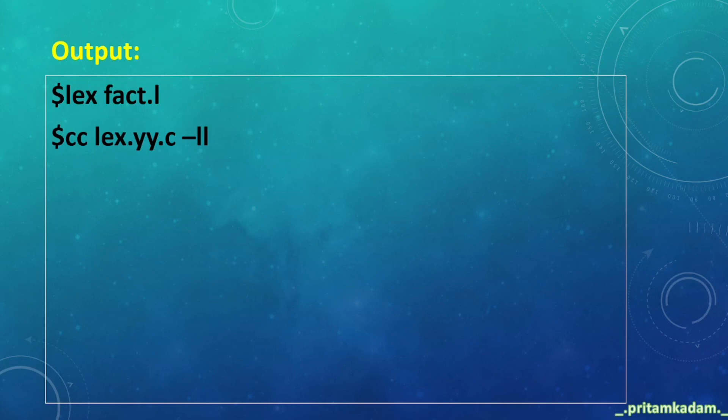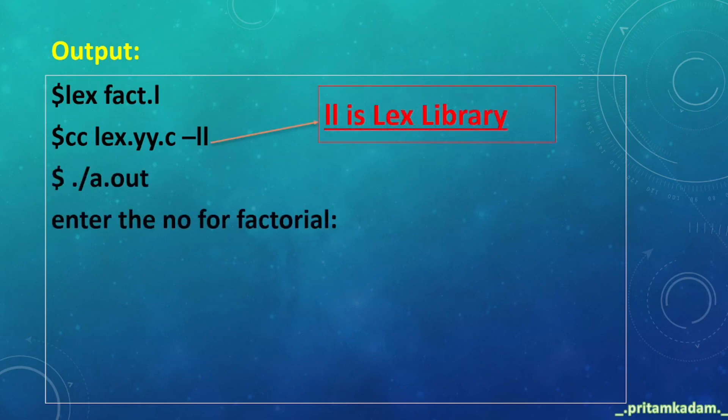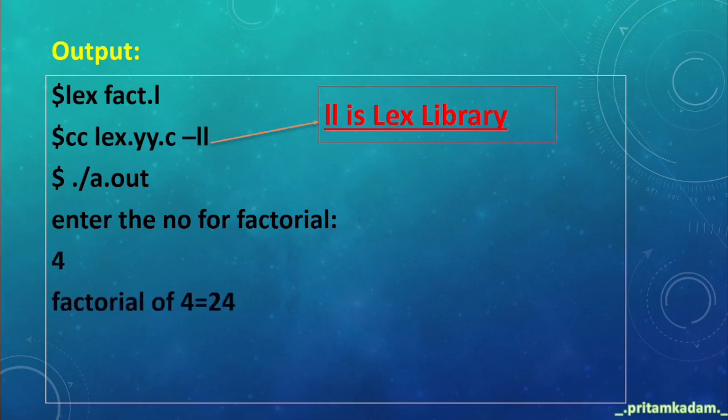Now a.out. Enter the number for factorial. Let's give the number as 4, and we get the answer as factorial of 4 equals to 24.